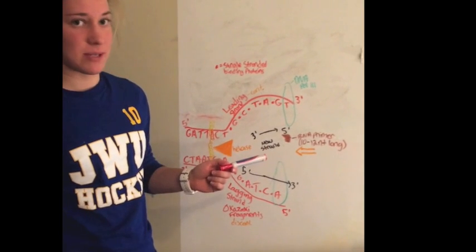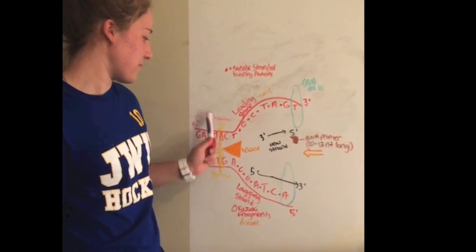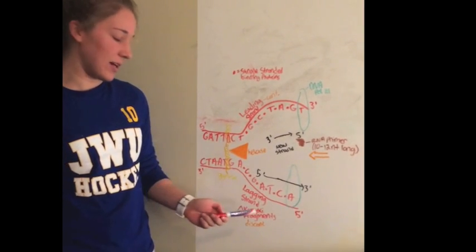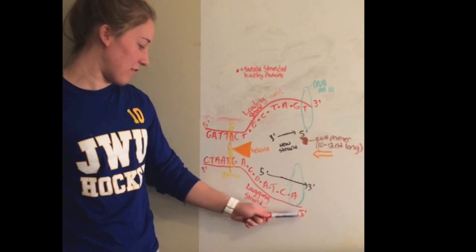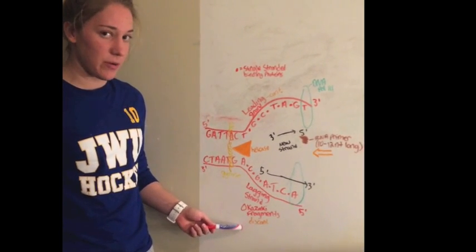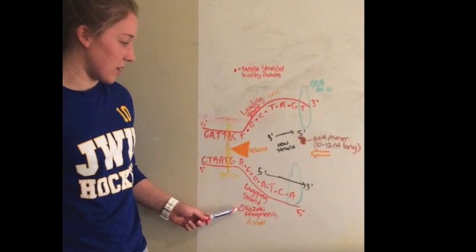The leading strand is represented by, it goes from the 3' to 5' direction and this is continuous, and the lagging strand occurs from 5' to 3' and this is discontinuous replication because Okazaki fragments are formed.